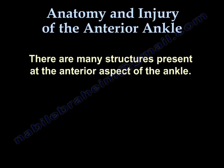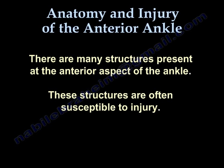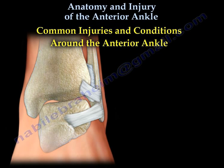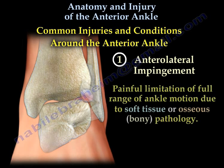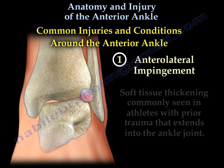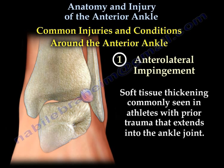There are many structures present at the anterior aspect of the ankle. These structures are often susceptible to injury. The first condition is anterolateral impingement — a painful limitation of full range of ankle motion due to soft tissue or osseous pathology. Soft tissue thickening is commonly seen in athletes with prior trauma that extends into the ankle joint.